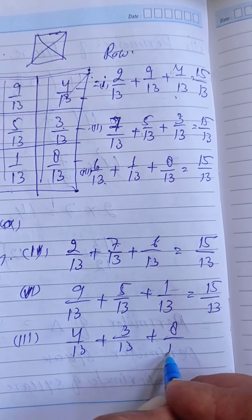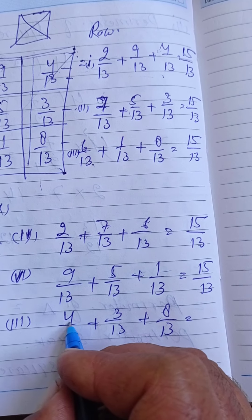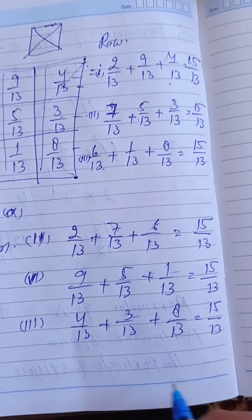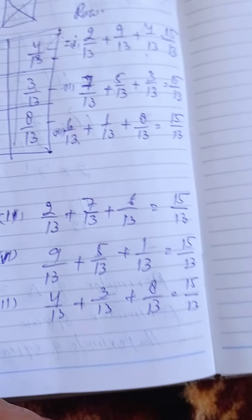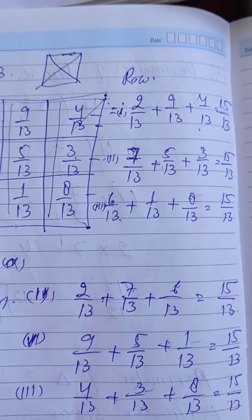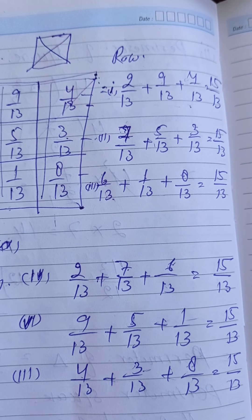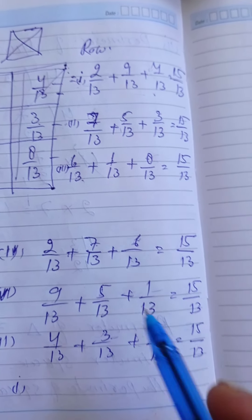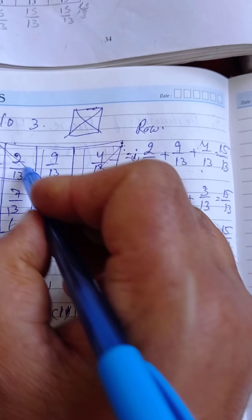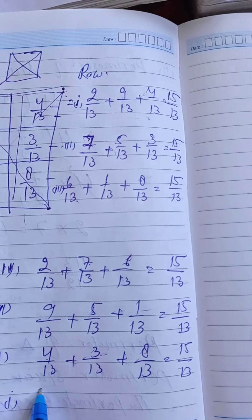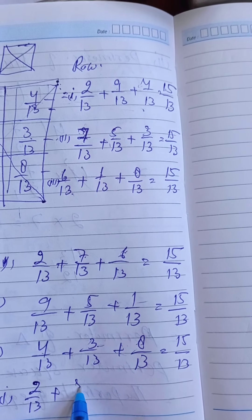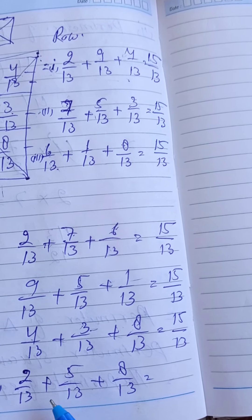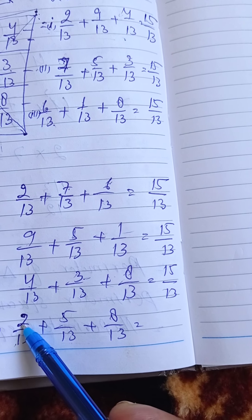The third column: 4/13 + 3/13 + 8/13. Adding numerators: 4 + 3 = 7, 7 + 8 = 15, giving 15/13. The denominator is the same here too. Now for the diagonals — diagonal 1 is: 2/13 + 5/13 + 8/13. Denominators are the same; we check the numerators.